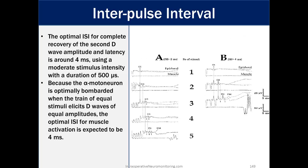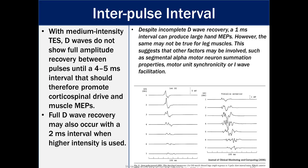Interpulse interval. The optimal ISI for complete recovery of the second D-wave amplitude and latency is around four milliseconds using a moderate stimulus intensity with a duration of 500 microseconds. So I got this from a paper that had that exact line in there but it does not specify what a moderate stimulus intensity is. So if you're going a little bit higher than maybe two milliseconds pulse duration works better. Because of the alpha motor neuron is optimally bombarded when the train of equal stimuli elicits D-waves of equal amplitudes, the optimal ISI for muscle activation is expected to be four milliseconds. Again, maybe this works out in Ativa but if you have some gas on board maybe it doesn't. There's a bunch of factors that is included in what ends up being the best and it's just something that you have to figure out on each patient on an individual basis. But those are good guidelines.